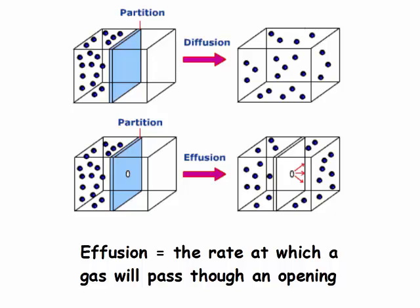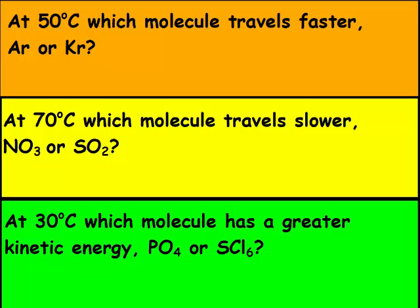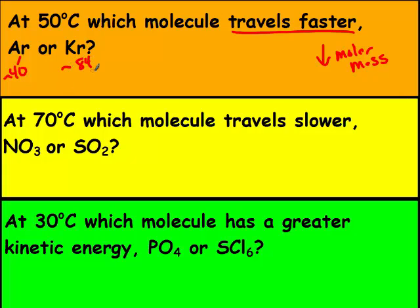Effusion is the rate at which a gas will pass through an opening. So at 50 degrees Celsius, which molecule travels faster — argon or krypton? To figure out who travels faster, we want the smaller molar mass. Argon is around 40 and krypton is around 84, so since we're looking for the smaller molar mass, argon travels faster.